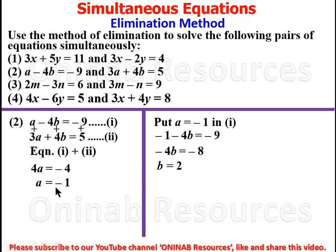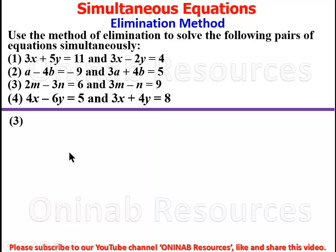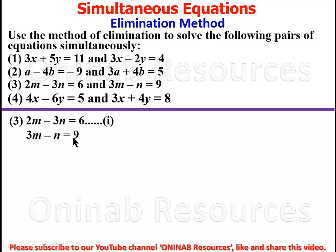So in coordinate form we have (a, b) which is (negative 1, 2). We go to problem 3. Problem 3: we have 2m minus 3n equal to 6 as equation 1, and 3m minus n equal to 9 as equation 2.